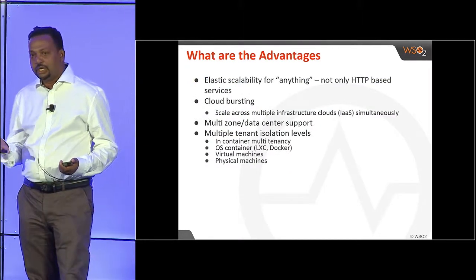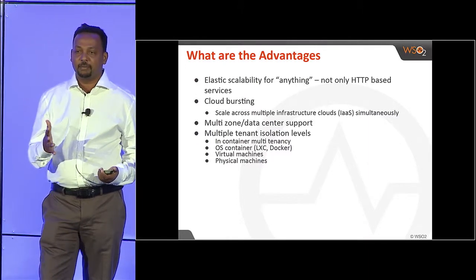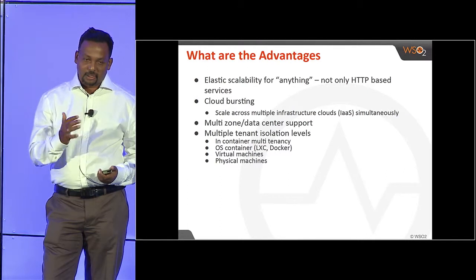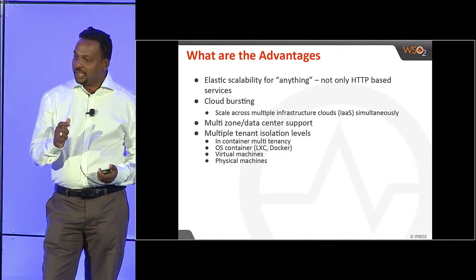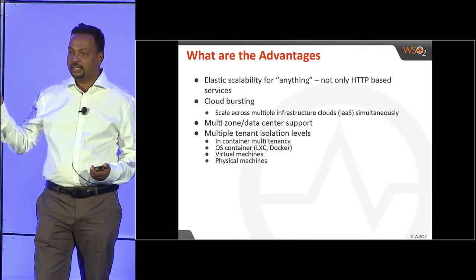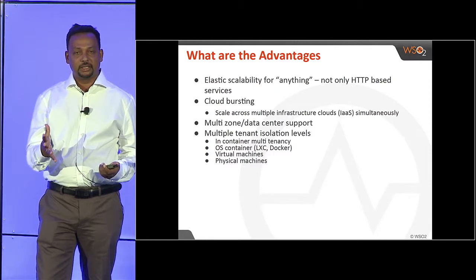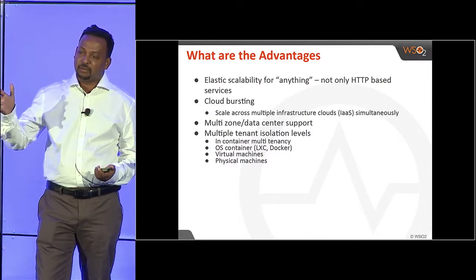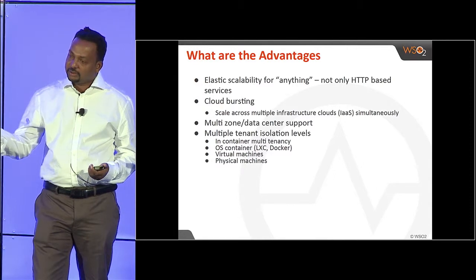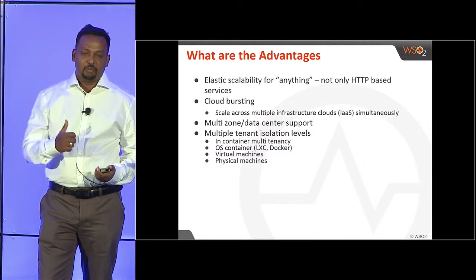So why should you bother about Stratos? As mentioned, the ability to deal with HTTP as well as non-HTTP traffic — anything can be scaled up and down using the cloud infrastructure — is something you get with this PaaS framework. It also has a unique advantage in terms of cloud bursting: it can simultaneously cloud burst into multiple infrastructure-as-a-service clouds. For example, if you have a private cloud and get a burst of load and want to use a public cloud like EC2, while keeping your existing cloud, you can offload the rest of the load into multiple external clouds.